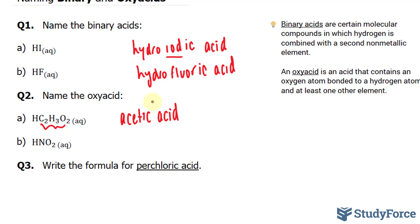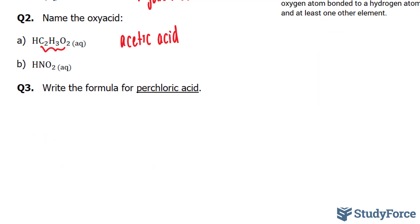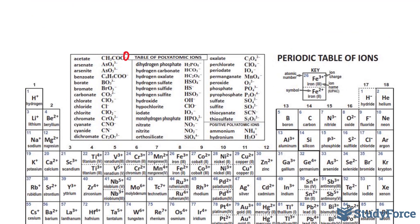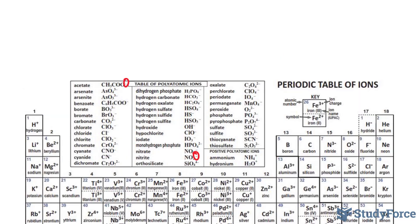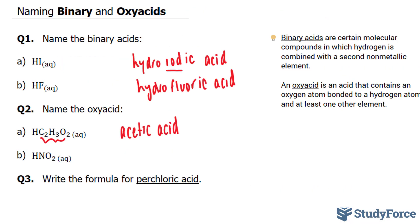Next, we have HNO2. Let's take a look at our periodic table. NO2 is a polyatomic ion — it's right here — nitrite, which has a charge of negative one. The way we name this acid is we say nitric acid. We replace the ITE with IC.